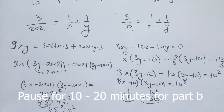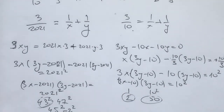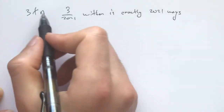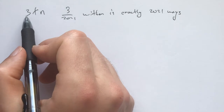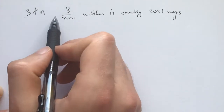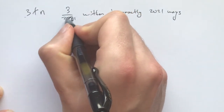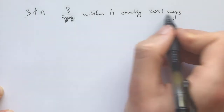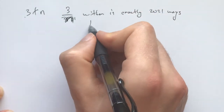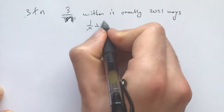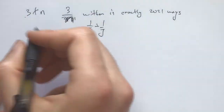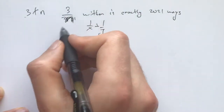Now I invite you to pause for 10 to 20 minutes and move on to Part B — see if you can solve it yourself. Part B asks: does there exist an integer n that 3 does not divide, such that 3/n can be written in exactly 2021 ways as a sum of two positive reciprocals?